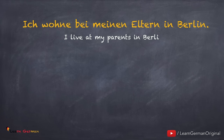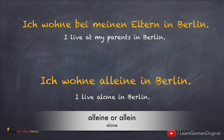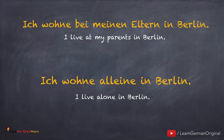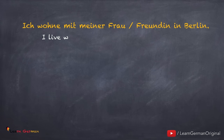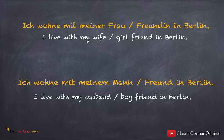Now we'll talk about with whom do you live. Ich wohne bei meinen Eltern in Berlin. Or if you're just living alone you would say: ich wohne alleine in Berlin. And if you're living with your partner you would say: ich wohne mit meiner Frau oder mit meiner Freundin in Berlin, or ich wohne mit meinem Mann oder mit meinem Freund in Berlin.